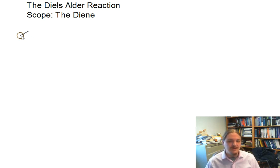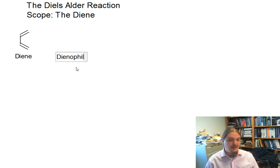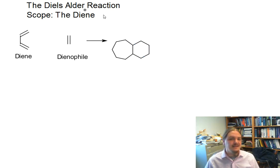So as a quick reminder, the Diels-Alder reaction is a reaction between a diene and something labeled a dienophile. And for this video, we're just going to look at the structure of the diene. And these two things come together to make a new cyclohexene molecule.